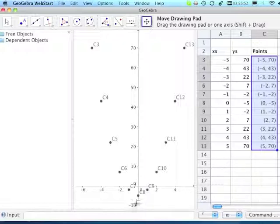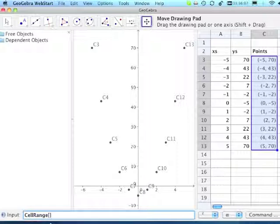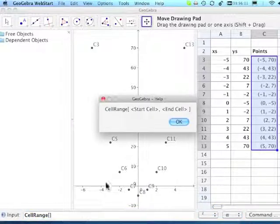What I need to do now is create a list, so what I'm going to do is use the command cell range. And cell range I'm going to look at the syntax. The syntax is of course the start cell comma the end cell, so that's going to be my C3 to C13. C3 comma C13.